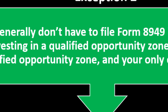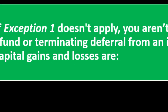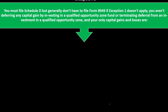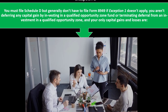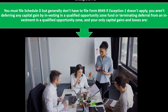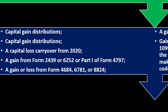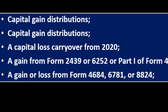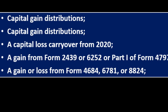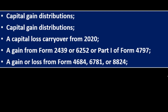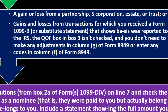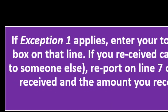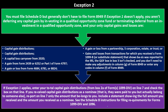Exception 2 for Schedule D: you must file Schedule D but don't have to file Form 8949 if Exception 1 doesn't apply, you aren't deferring any capital gain by investing in a qualified opportunity zone fund or terminating a deferral, and your only capital gains and losses are capital gains distributions, a capital loss carryover from 2020, a gain from Form 2439 or 6252 or Part 1 of Form 4797, or a gain or loss from Form 4684, 6781, or 8824. For more detail, see the 1040 instructions at IRS.gov.